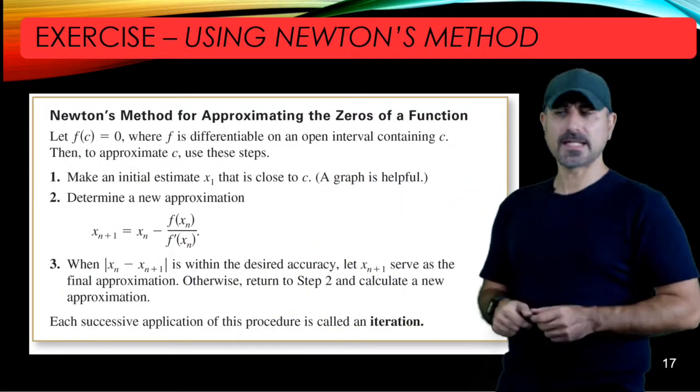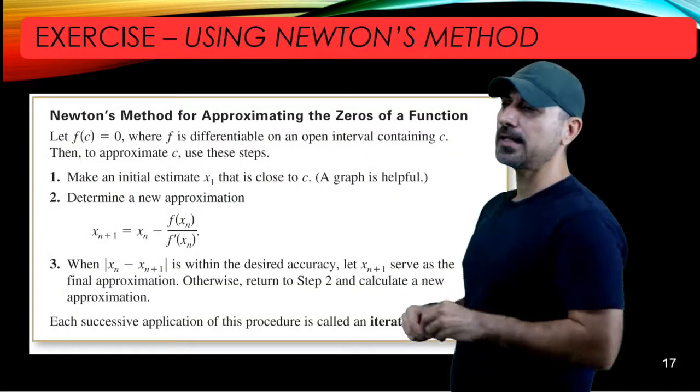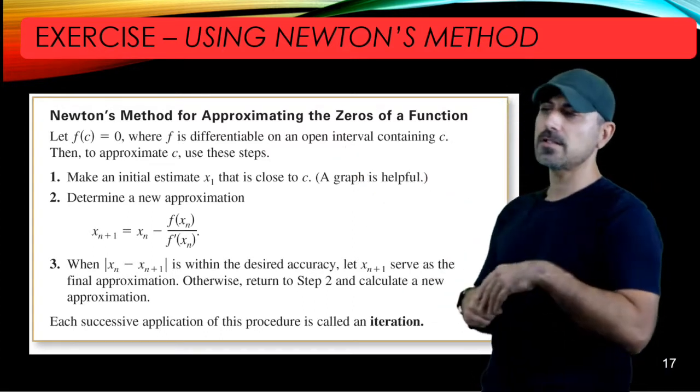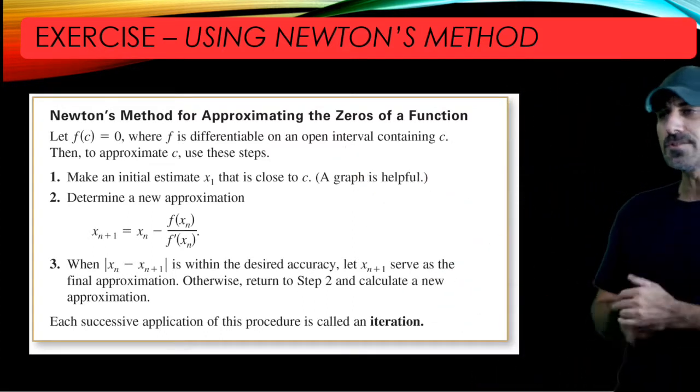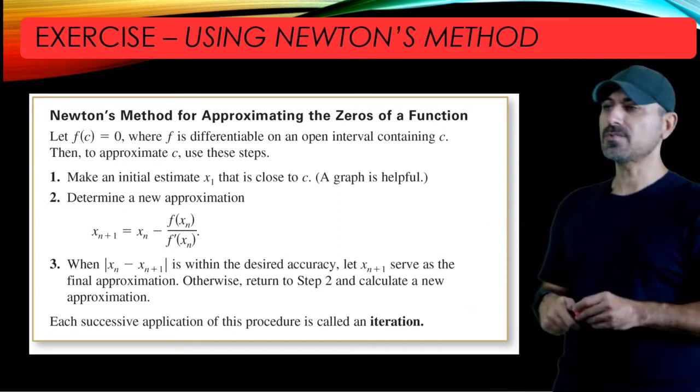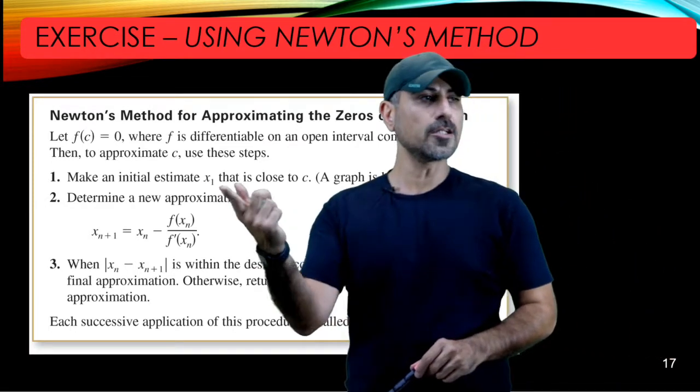Let me remind you about Newton's method. We're trying to get a good approximation to a zero of a function. Let's say c is the zero of the function and f is differentiable on an open interval containing the zero.